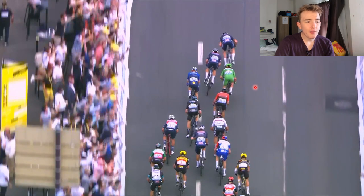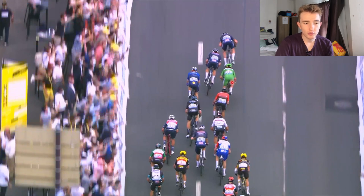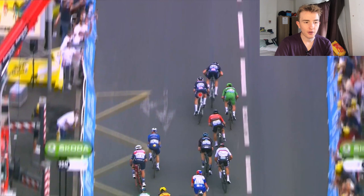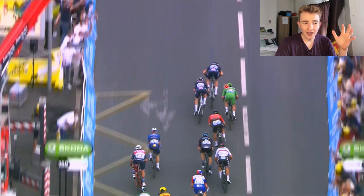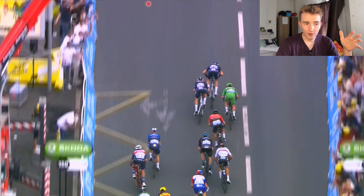Cavendish decides to launch — he's going off Merlier's wheel, which is fine. Cavendish is on the right-hand side of the line, which is fine. And Philipson, who's basically the main sprinter, is on the left-hand side of the line. So what we expect is Cavendish moving this way and Philipson moving that way, and it'll all be fine like a normal sprint.